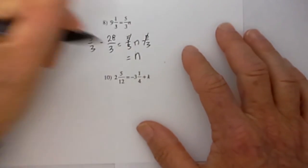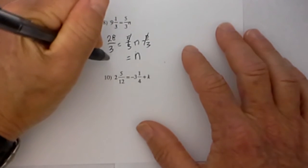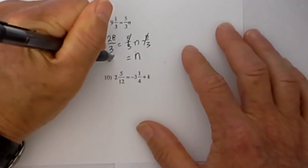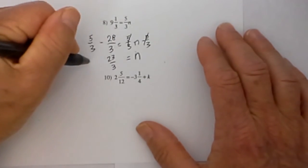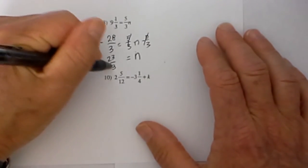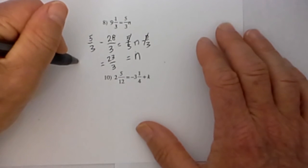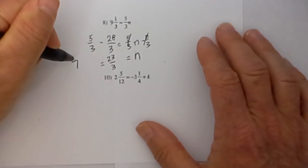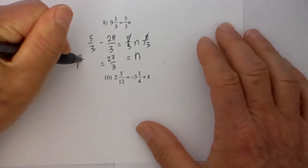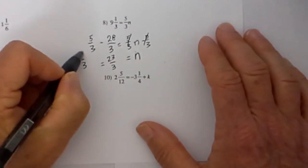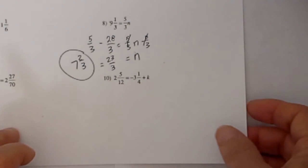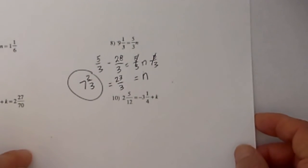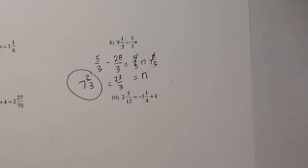So n is equal to 28 minus 5 is 23 over 3 and then that will convert to 3 will go into 23 seven times with 2 left over so that becomes n is equal to 7 and 2 thirds. I hope that helps with solving one step equations with fractions.